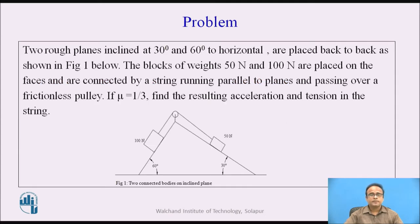This is our problem. The statement is: two rough planes which are inclined at 30 degrees and 60 degrees to the horizontal are placed back to back as shown in figure 1 below. The blocks of weights 50 N and 100 N are placed on the faces and are connected by a string which is running parallel to the planes and passing over a frictionless pulley. If the coefficient of friction mu is equal to one-third, that is 0.33, we are supposed to find the resulting acceleration and tension in the string.